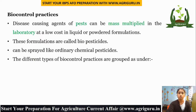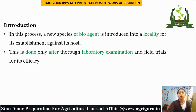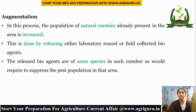Biocontrol practices: disease-causing agents of pests can be mass-multiplied in the laboratory at low cost in liquid or powdered formulations, called biopesticides, which can be sprayed like ordinary chemical pesticides. The different types of biocontrol practices are: Introduction — a new species of bio-agent is introduced into a locality for its establishment against its host, done after laboratory examination and field trials for efficacy. Augmentation — the population of natural enemies already present in an area is increased by releasing laboratory-reared or field-collected bio-agents of the same species in numbers sufficient to suppress the pest population.